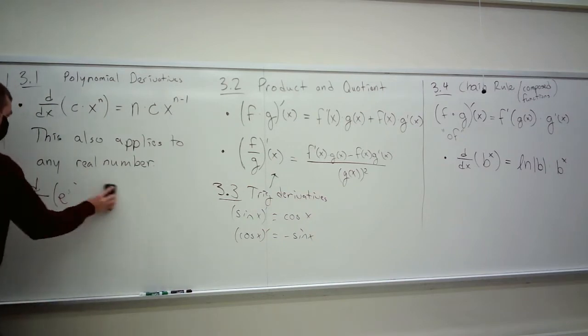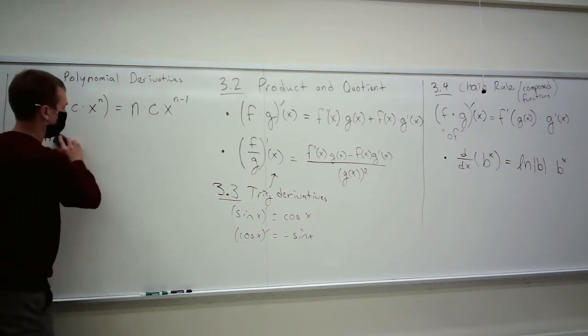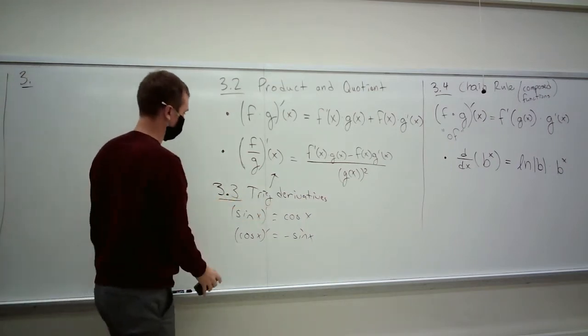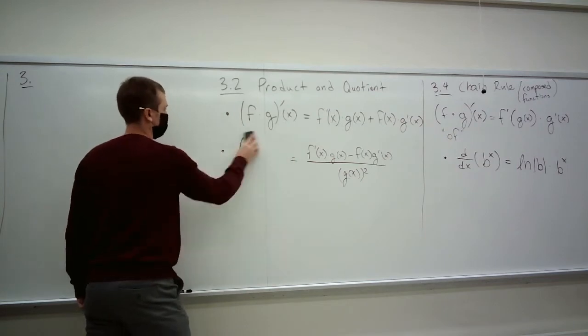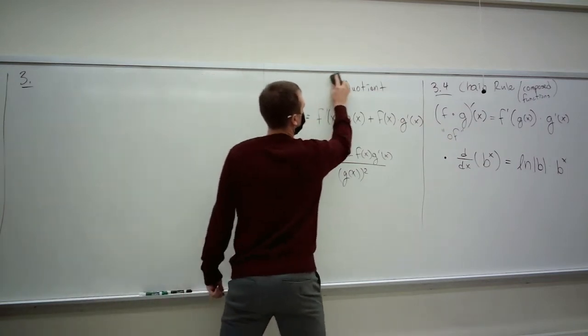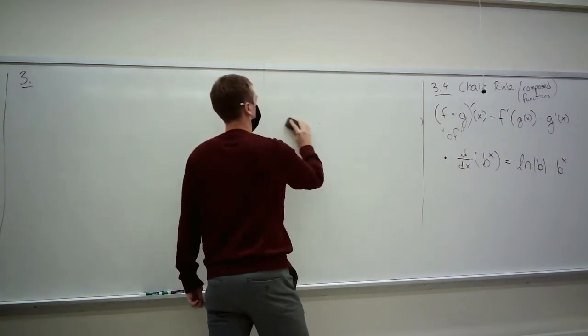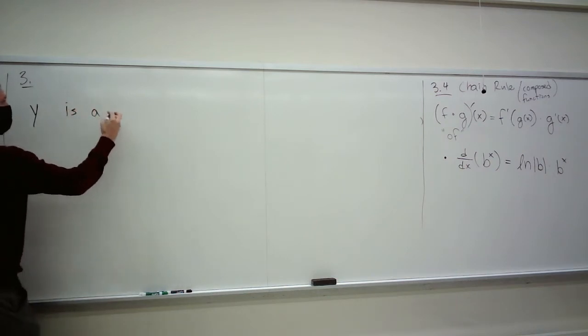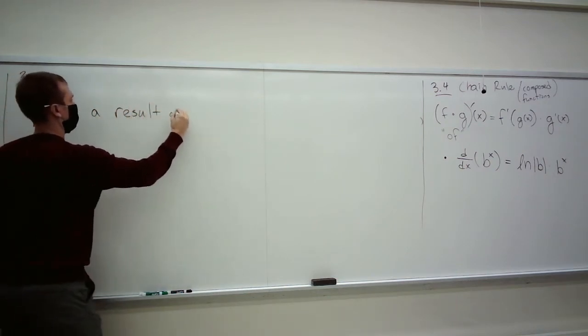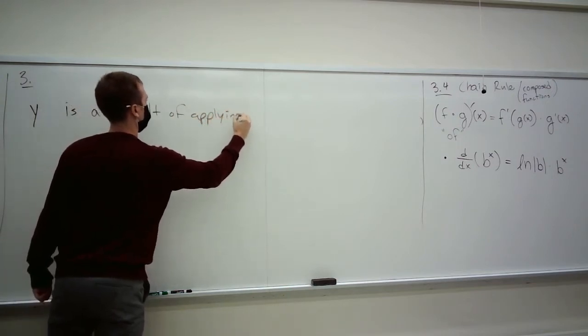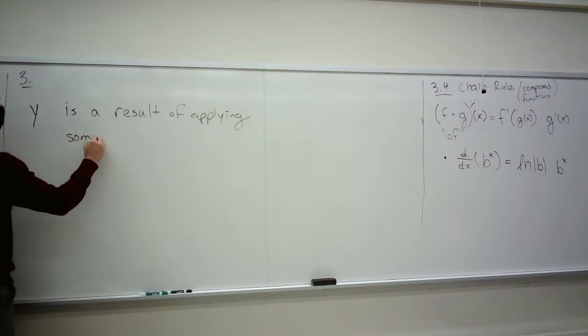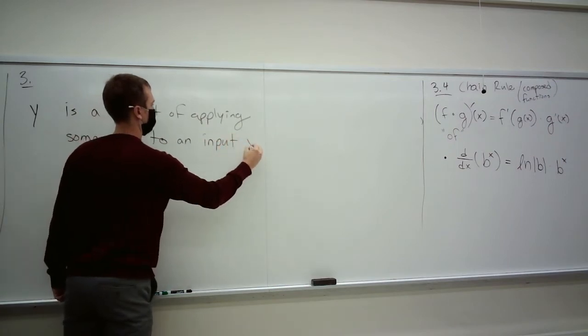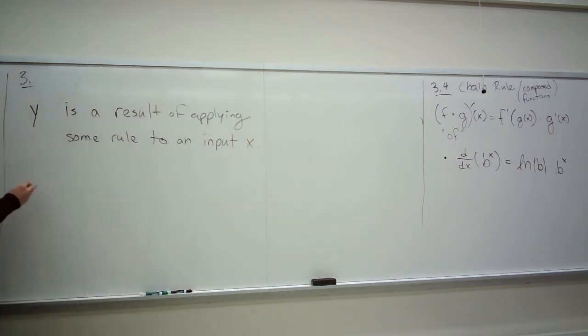Today, it really kind of gets just a little bit worse, actually. Not to beat around the bush. For all of these functions that we've dealt with so far, polynomials, exponentials, trigonometric functions, etc., you could write down the rule. For example, you could say y is a result of applying some rule to an input x. And it's usually described like this. For a polynomial, it's y is on the left. The rule is on the right of the equal sign.